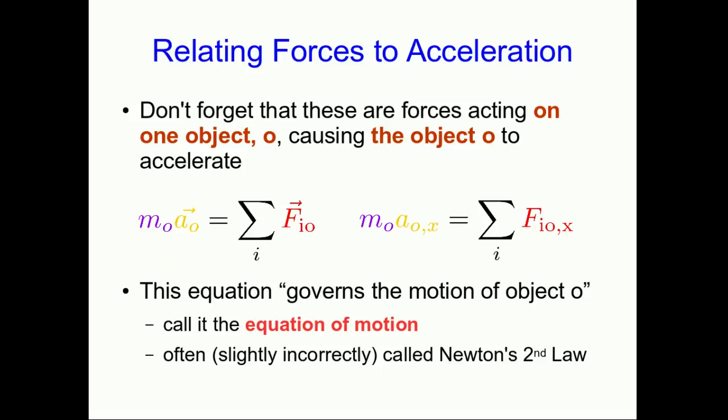Technically, that's not quite correct. The equation we started out with, that the time derivative of the momentum is the vector sum of the forces, is really the thing that's called Newton's second law. This, that we have here, is a special case for a constant inertia.